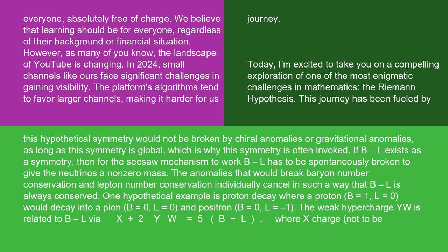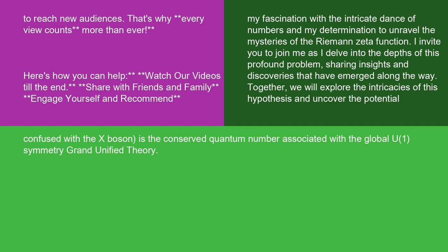The weak hypercharge YW is related to B-L via X + 2YW = 5(B-L), where X charge — not to be confused with the X boson — is the conserved quantum number associated with the global U(1) symmetry of grand unified theory.